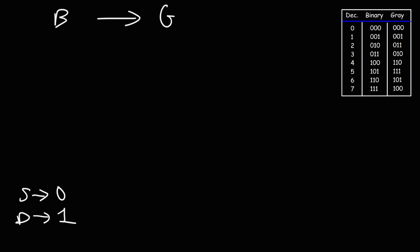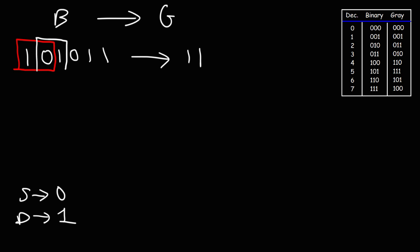Now let's try a harder example. Let's say we have the binary number 101011 — go ahead and convert that into gray code. The MSB stays the same: 1. Then 1 and 0 are different, so we put 1. 0 and 1 are different, so we put 1. 1 and 0 are different, so we put 1. 0 and 1 are different, so 1. And finally 1 and 1 are the same, so 0. The answer in gray code is 111110.